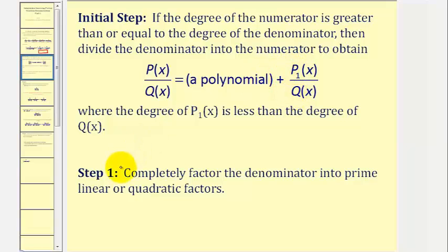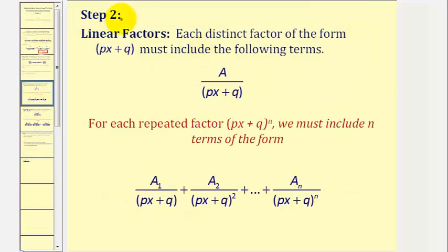Once the degree of the numerator is less than the degree of the denominator, we can perform partial fraction decomposition. For step one, we completely factor the denominator into prime linear and quadratic factors. For step two, for every distinct linear factor, we include a fraction where the numerator is an unknown constant and the denominator is that linear factor.